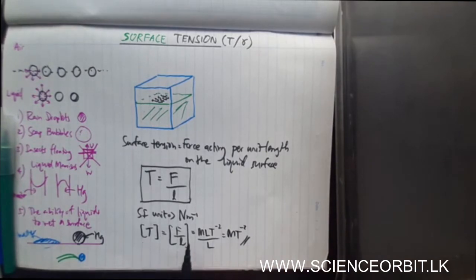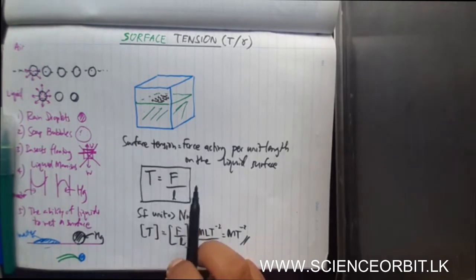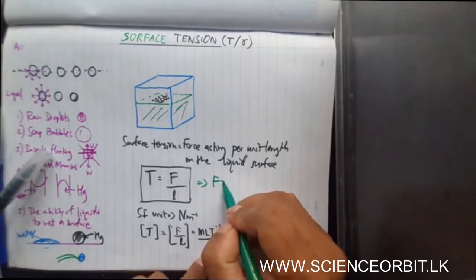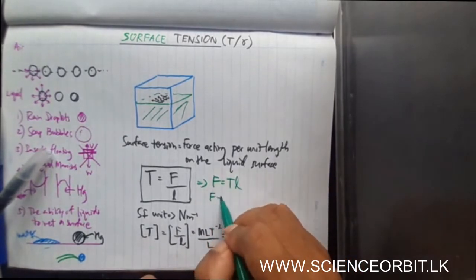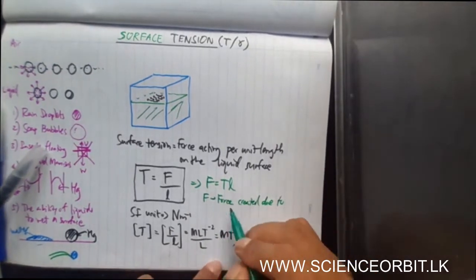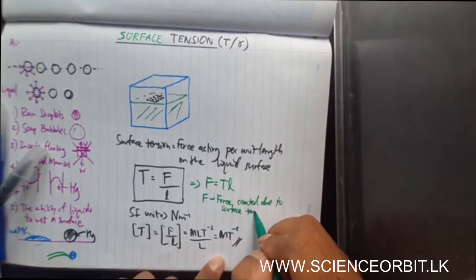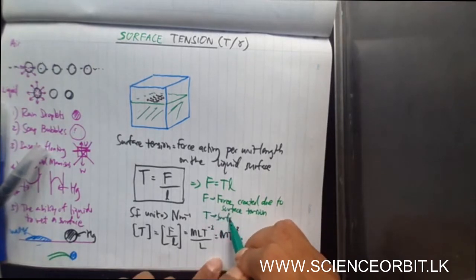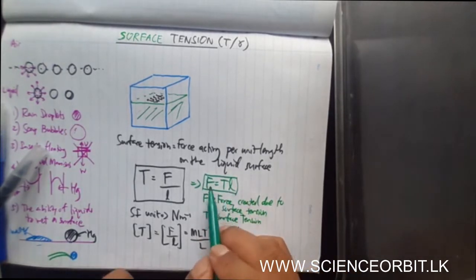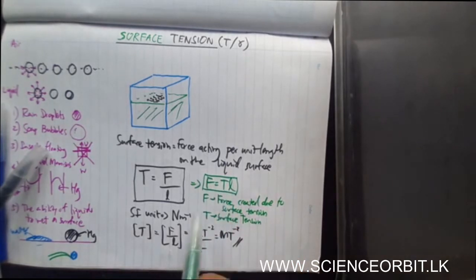Interestingly, another quantity has the same dimension and unit as surface tension. You may remember Hooke's law: F = kx. If we rearrange the surface tension equation, it looks like F = TL, where F is force created due to surface tension, T is surface tension, and L is the length. This looks similar to F = kx, so spring constant k and surface tension T have the same units and dimensions — but they are two completely different quantities.